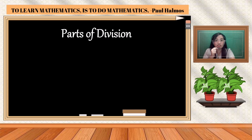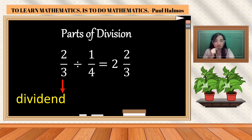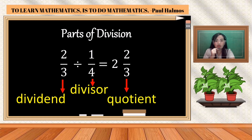Let us review the parts of division. In two-thirds divided by one-fourth equals two and two-thirds: the first fraction is our dividend, the second is the divisor, and the last, which is the answer, is called the quotient.